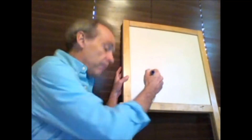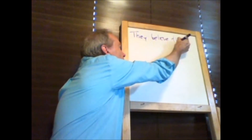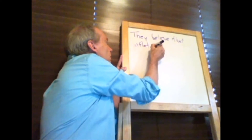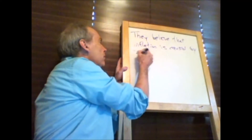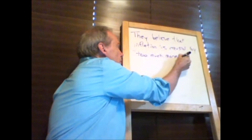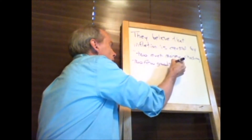Give the monetarist explanation of inflation that includes MV equals PY. They believe that inflation is caused by — quote — 'too much money chasing too few goods.' This is the monetarist explanation; it's not the post-Keynesian. That's going to come second.